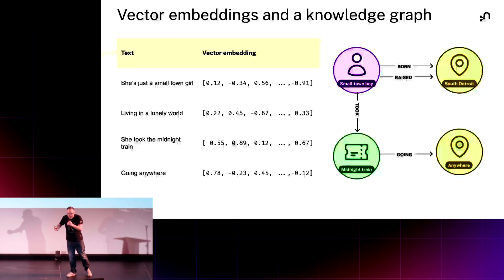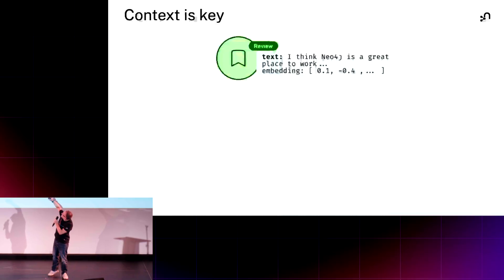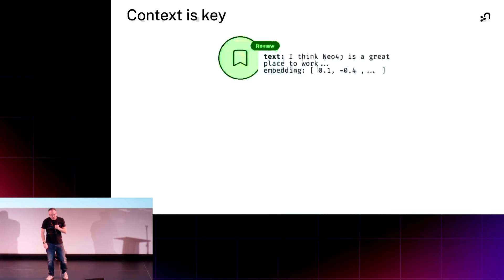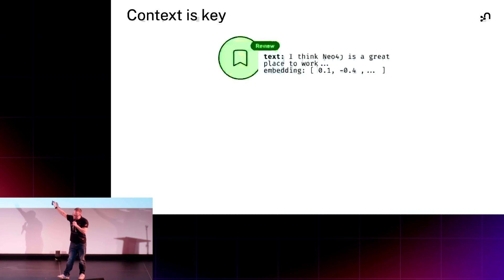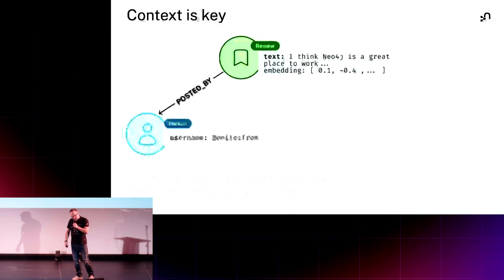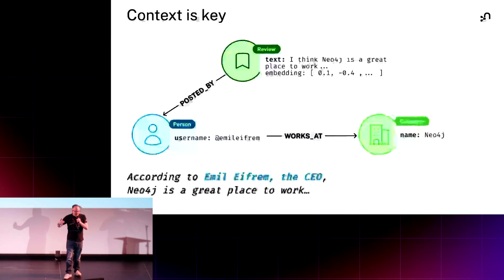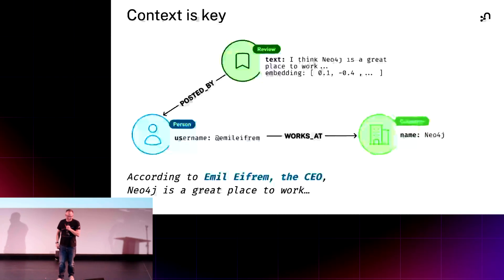We can extract the bits — the contextual information that's most important. Because context is key. For example, a job review says 'Neo4j is a great place to work.' But that review was posted by someone called Emil Eifrem, who works at Neo4j. So the enriched response becomes: 'According to Emil Eifrem, the CEO of Neo4j, it is a great place to work.' Context is king.